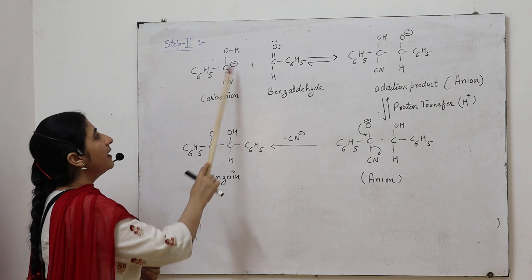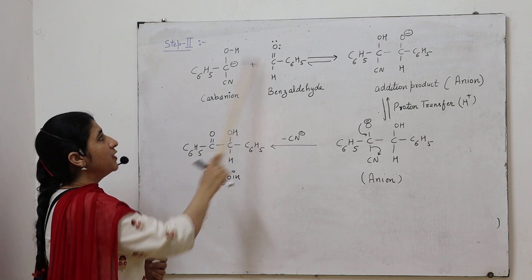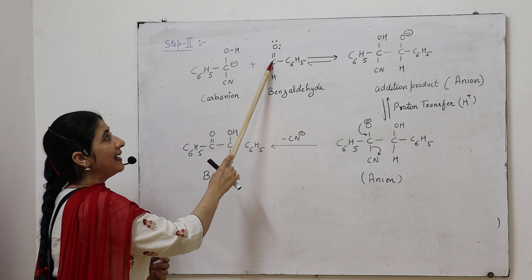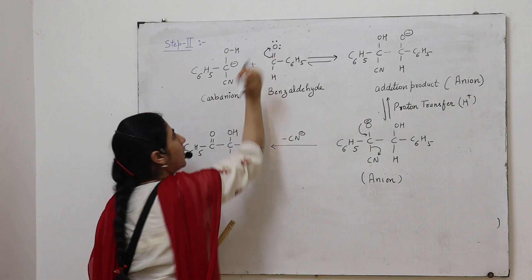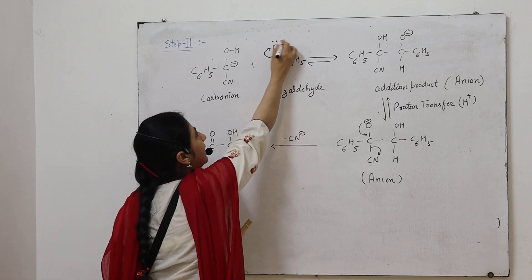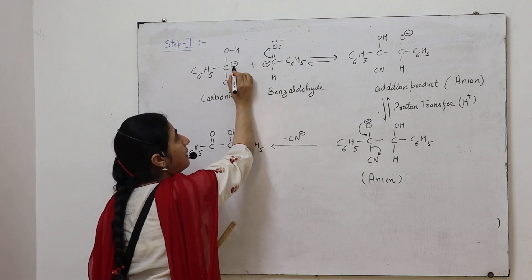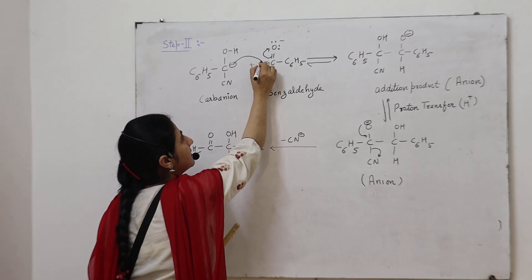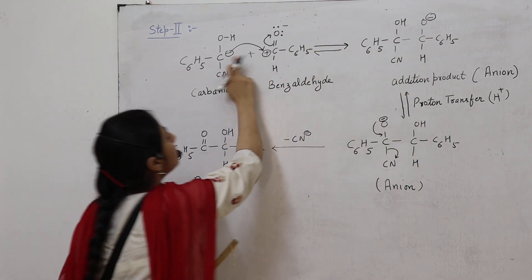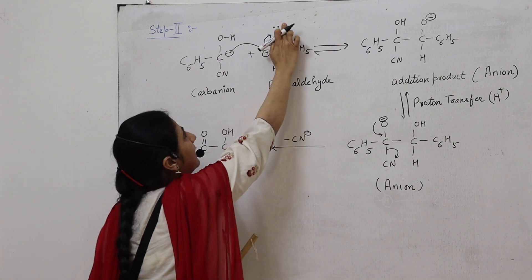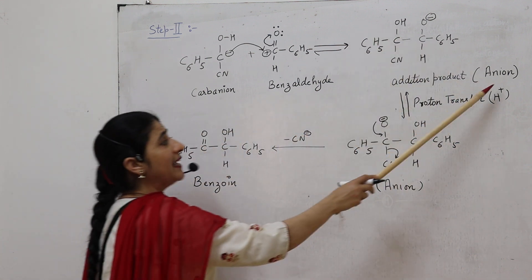The negative charge attacks the electron-deficient side. As the carbanion comes close to the second aldehyde molecule, there is a migration of pi electrons toward the oxygen, so oxygen acquires a negative charge and carbon acquires a positive charge. The negatively charged carbanion attacks this positively charged center to form a carbon-carbon sigma bond. Due to this migration, the oxygen acquires a negative charge, giving rise to an addition product anion.